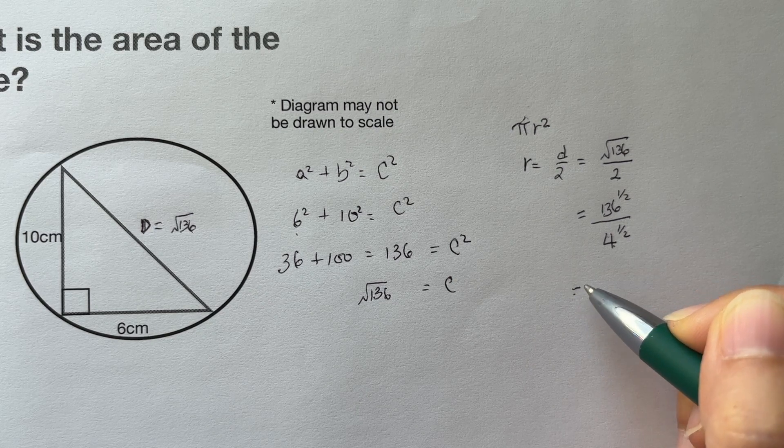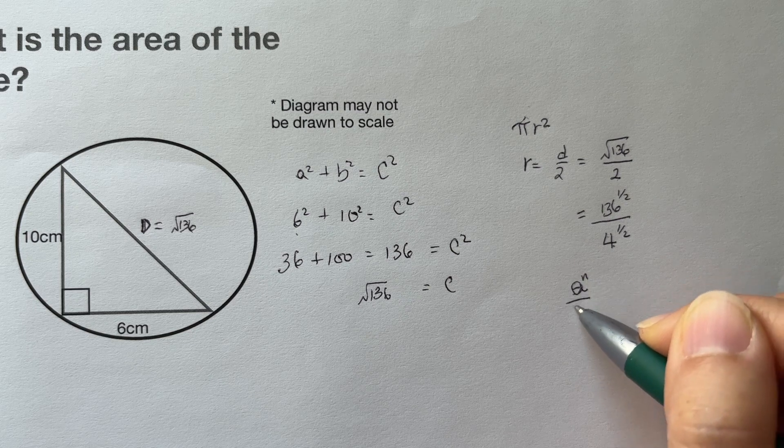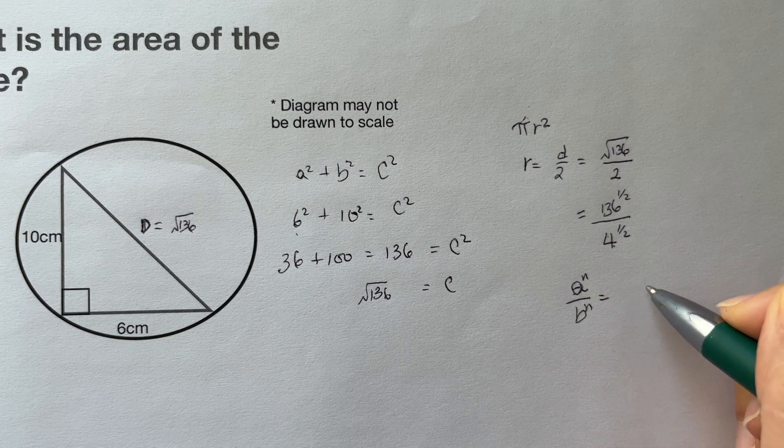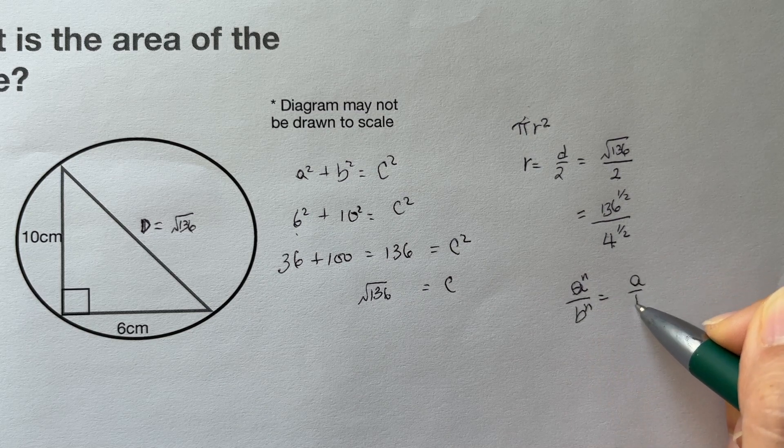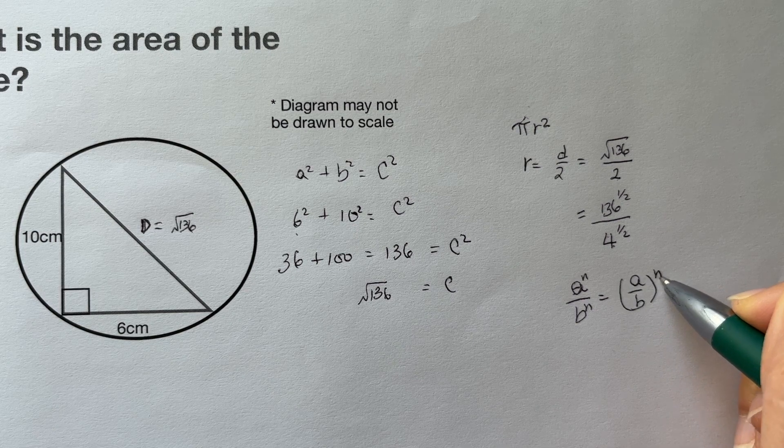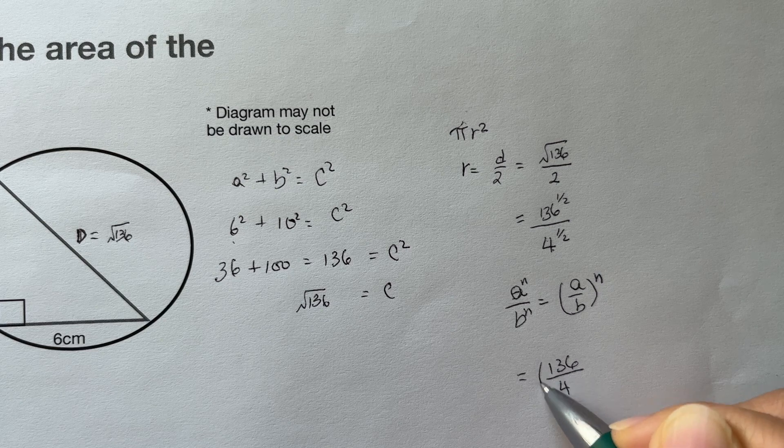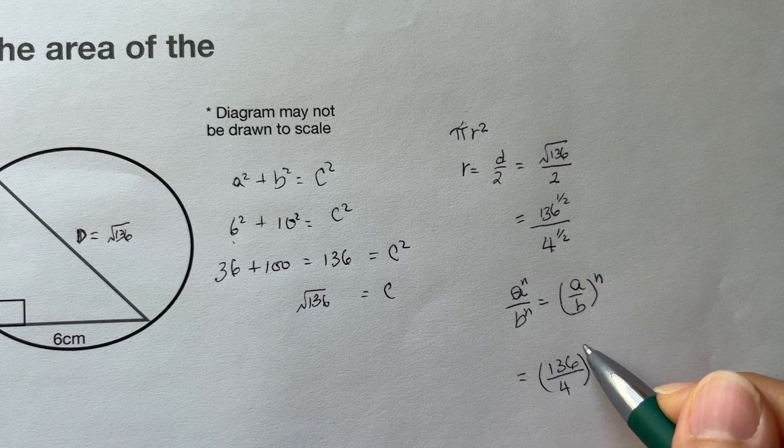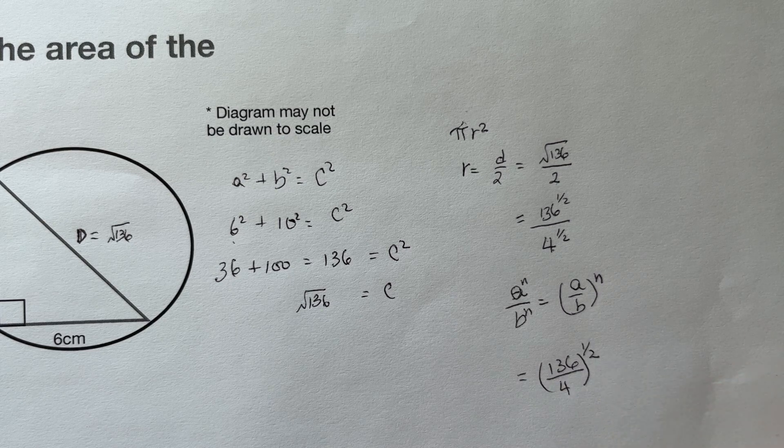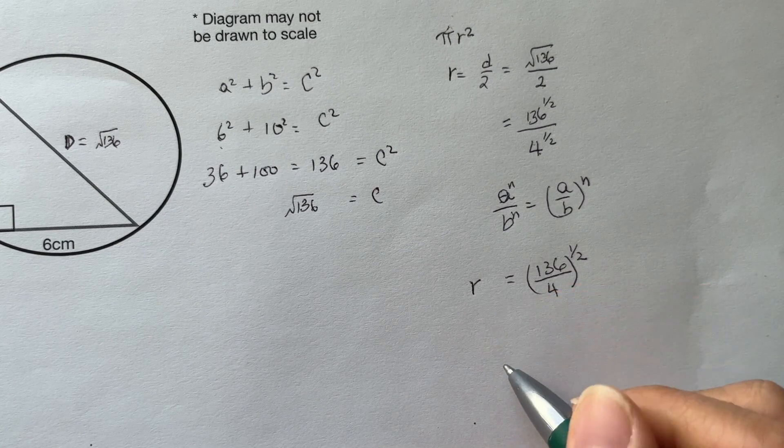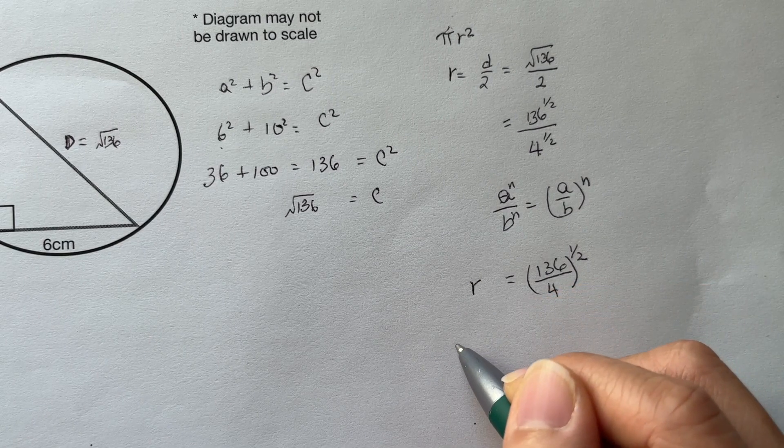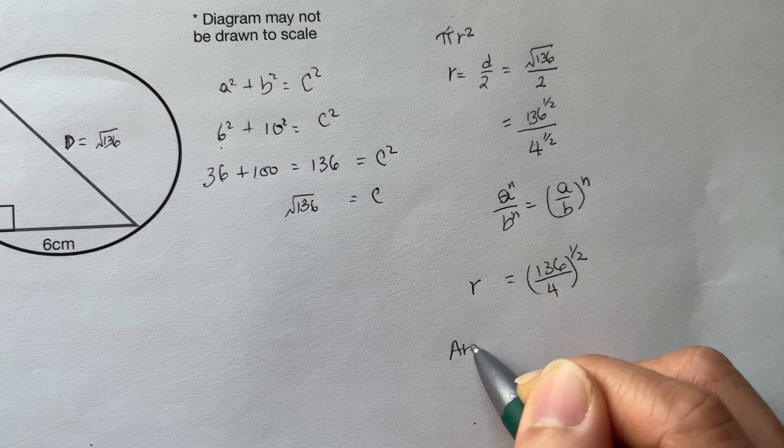We'll use the formula: a^n divided by b^n equals (a/b)^n. So here we can rewrite this as (136/4) raised to the 1/2.